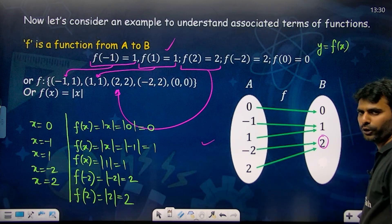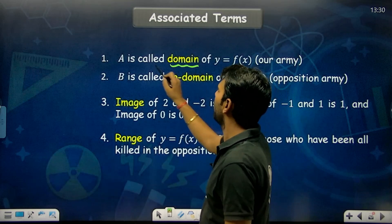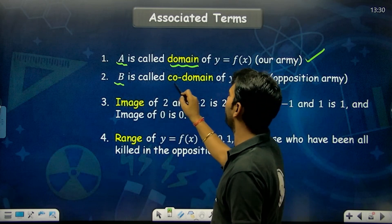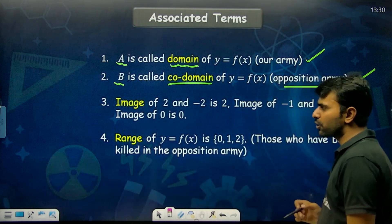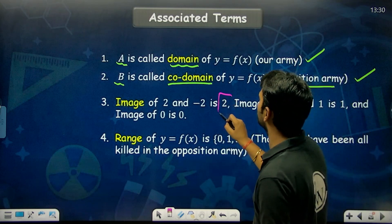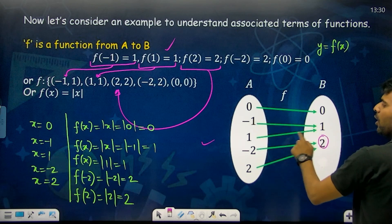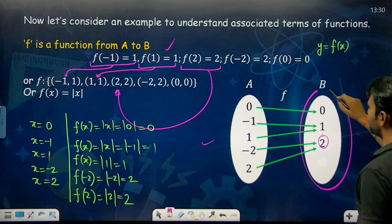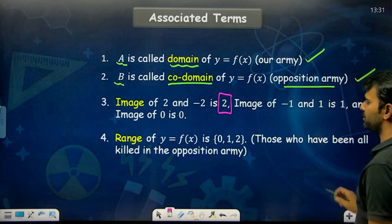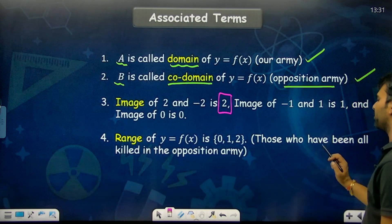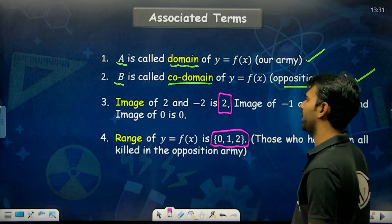Every representation — Venn diagram, ordered pairs, or f(x) notation — represents the same function. What is the domain? Our army: {-1, 1, 2, -2, 0}. Co-domain: the opposition army. Range: who has been killed — {0, 1, 2}. Image of 2 and -2 is 2; pre-images of 1 are -1 and 1; pre-image of 0 is 0.